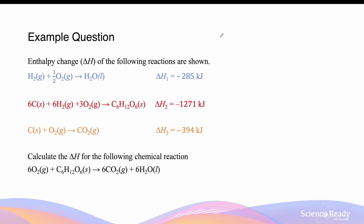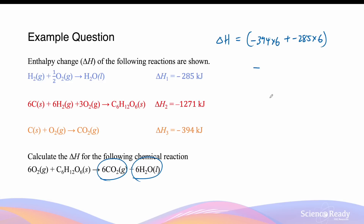We can find the enthalpy change of respiration by finding the difference in enthalpy of formation of the products and the reactants. The enthalpy of formation of the products (CO₂ and water) is: −394 × 6 plus −285 × 6. We then subtract the enthalpy of formation of the reactants: −1271 for glucose and zero for oxygen. This gives a value of −2803 kJ of energy released per mole of glucose used in respiration.